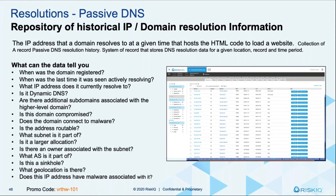We're also looking at the AS number — the autonomous system. Is it part of Amazon, is it in China, is it in Italy? Is it in a foreign place that you don't do business with but it looks like it might be your domain or a customer or partner? We're able to look to see if it has ever been compromised, if it is sinkholed, and what country is associated with all those types of things.